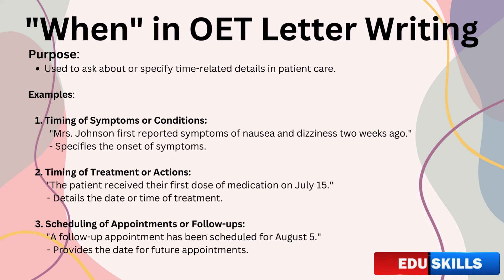Example one: timing of symptoms or conditions. Say you need to describe when a patient first noticed their symptoms. You might write: 'Mrs. Johnson first reported symptoms of nausea and dizziness two weeks ago.' Here, when tells us the time frame for when the patient began experiencing these symptoms. Example two: timing of treatment or actions. When detailing treatment, when helps specify exactly when these occurred. For example: 'The patient received their first dose of medication on 15th July.' This clearly indicates the date of the treatment, which is important for tracking the patient's progress.